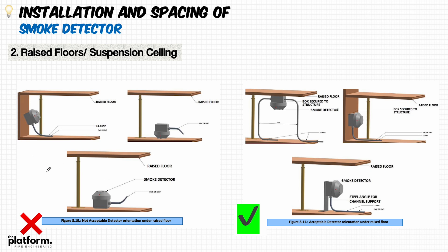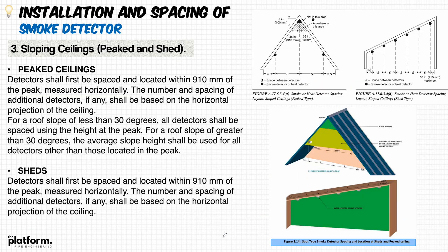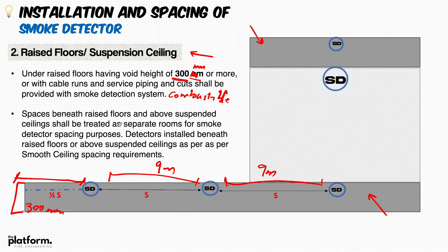The UAE Fire Life Safety Code of Practice provides guidance on installation in raised floors and trenches. There is an unacceptable installation shown, and guidance on how the smoke detector shall be properly installed. The main purpose is to ensure proper smoke flow so that the detector can detect smoke in case of fire. Please follow the installation guidance found in Chapter 8, Figure 8.11 of the UAE Fire Life Safety Code of Practice.